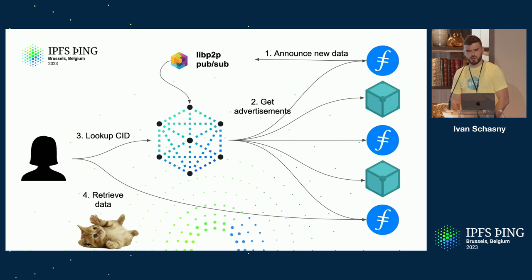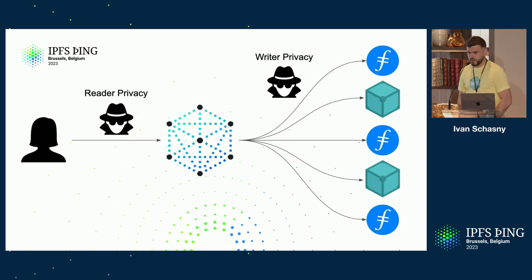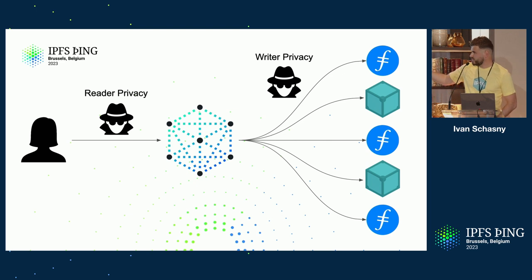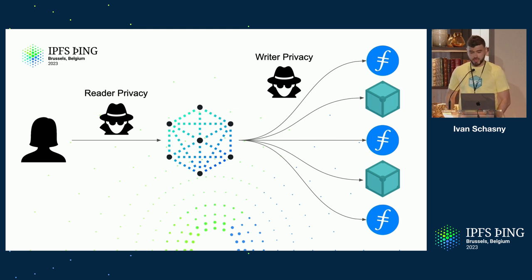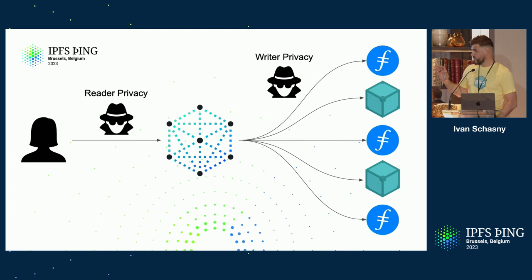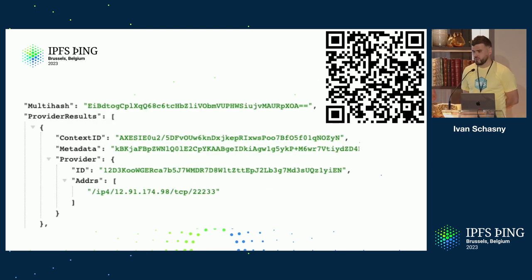IPNI is used as the content router across both IPFS and Filecoin networks, and has been the default content router alongside the DHT since Kubo version 18. Regarding privacy, we separate two main topics: reader privacy and writer privacy. This presentation is focused on reader privacy — as a user, I don't want IPNI, another content router, or a man-in-the-middle observing traffic to figure out what data I'm looking for. Writer privacy means as a content publisher, I don't want the content router system to spy on me. Both topics are equally important, but our primary focus right now is reader privacy.